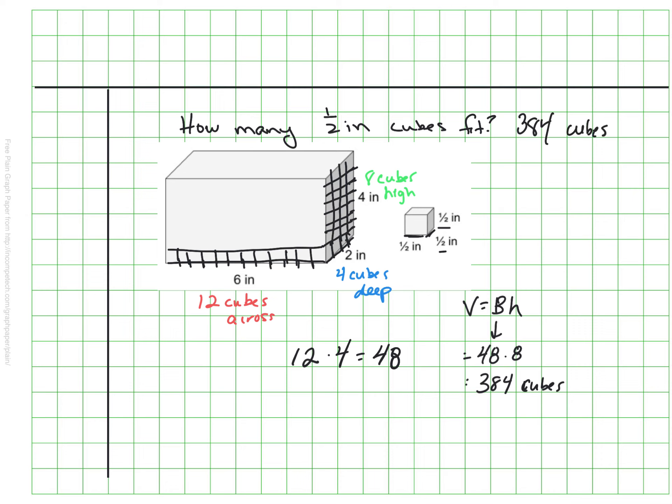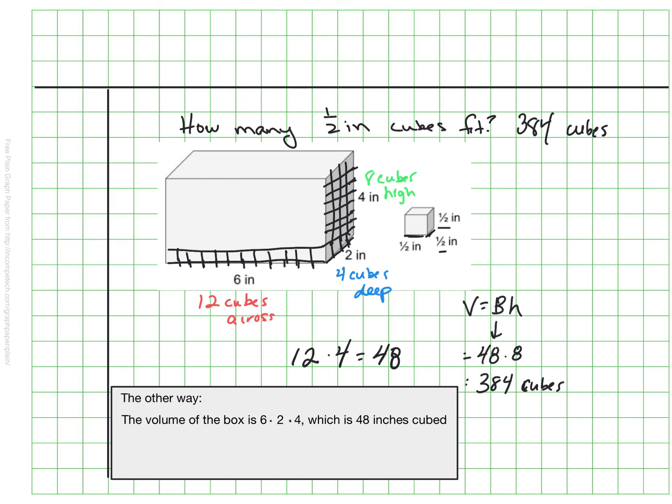And remember, there's the non-visual way to calculate this as well. And that's remembering that this box is 48 cubic inches. And we know the small cube is one half by one half by one half, which works out to be one eighth cubic inch. And if we do the calculations, if we take our 48 inches cubed and divide it by our one eighth that each one of these tiny cubes is measuring, we would in fact get 384 cubes, just like we did with our visual. So two ways, same answer.